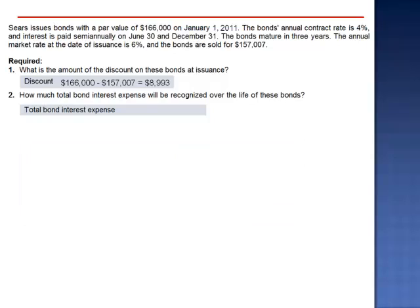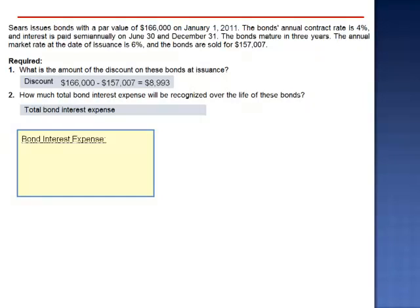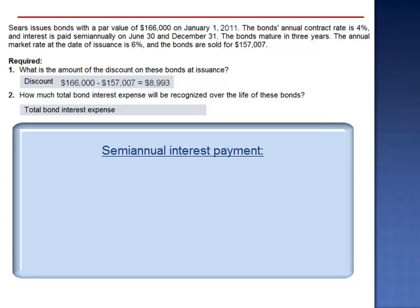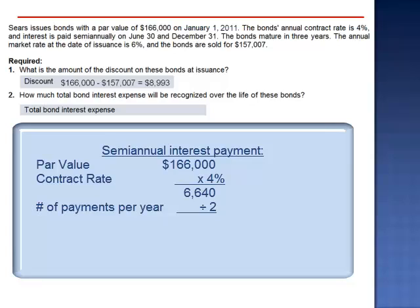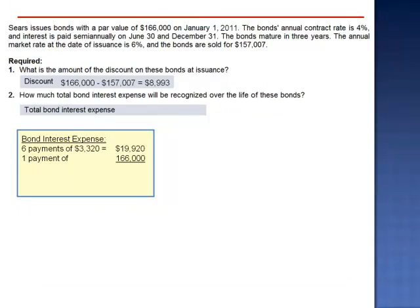Number 2: How much total bond interest expense will be recognized over the life of these bonds? The simplest and most accurate definition of interest is it's the difference between what gets borrowed and what gets paid back. In this case, the total amount we're going to repay is 6 payments of $3,320. The $3,320 is calculated by taking 4%, the contract rate, multiplying it by the par value, $166,000, and dividing by 2 payments per year. Over the 3-year period, there will be 6 payments of $3,320, followed by a lump sum payment equal to the par value, $166,000. Total repayments on this debt: $185,920 minus the amount that Sears was able to borrow, $157,007. Total interest expense is $28,913.